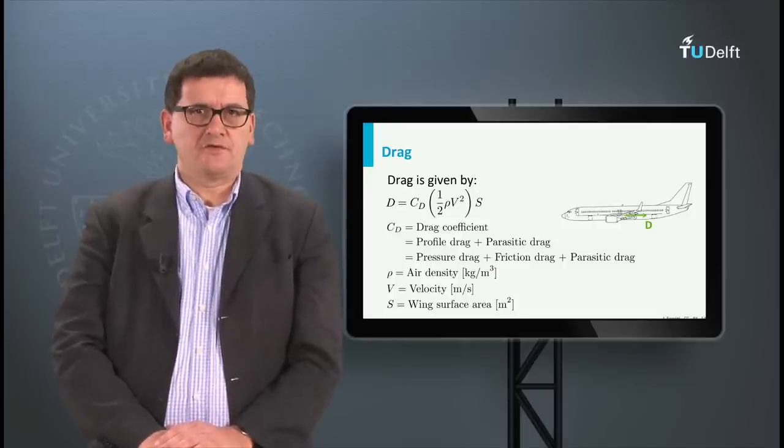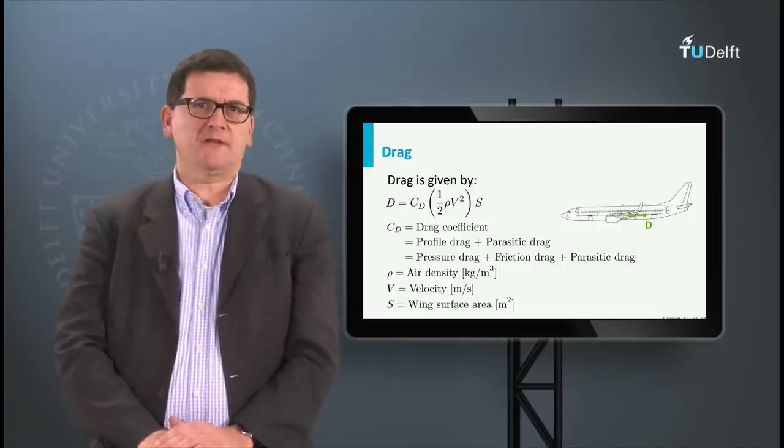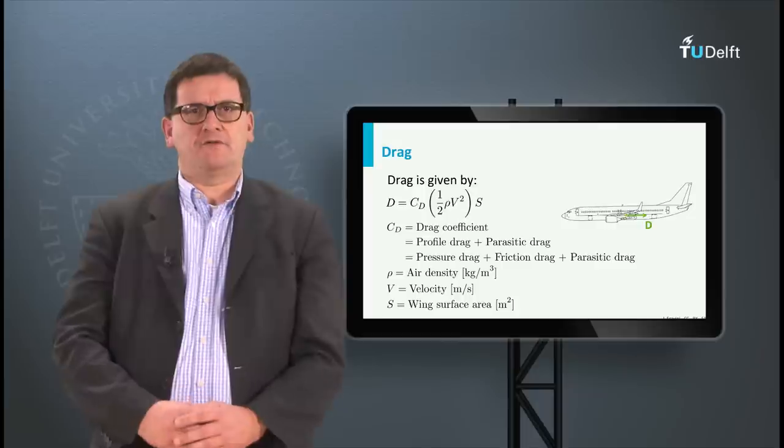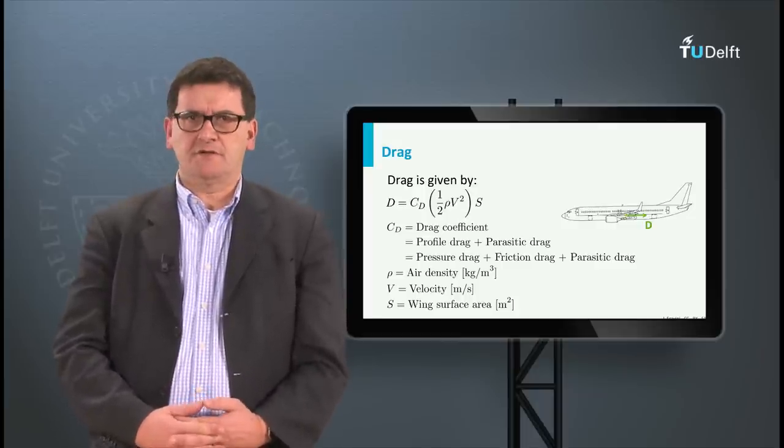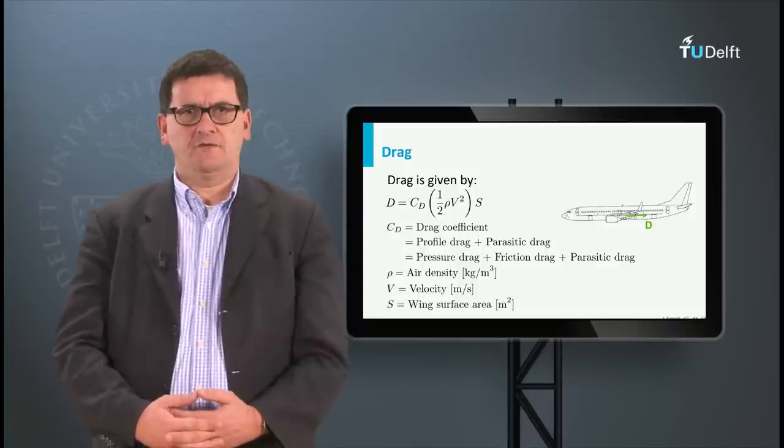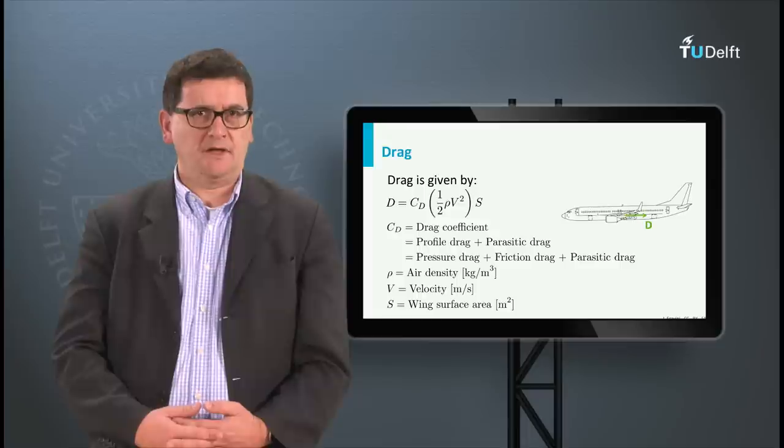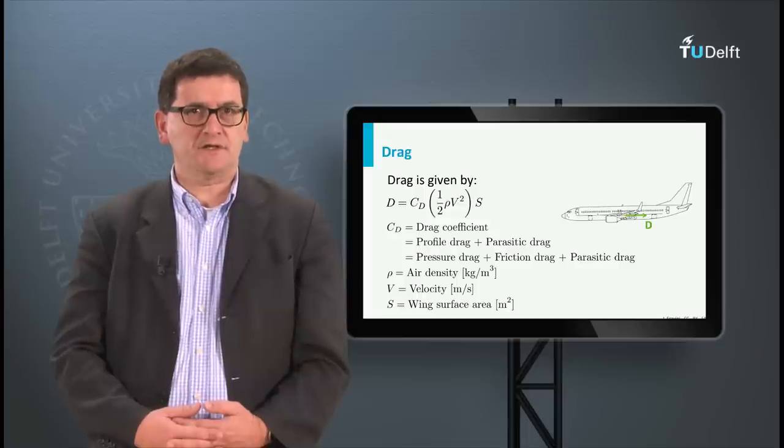The drag is composed of several contributions. One way to split the drag is to look at the profile drag and the parasitic drag. The profile drag is related to the wing surfaces and the parasitic drag to the other sections of the aircraft like the fuselage, undercarriage, etc.